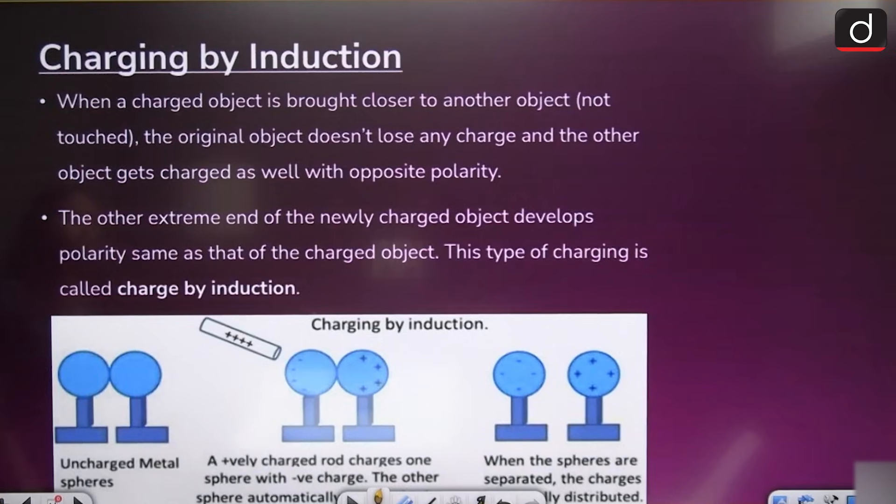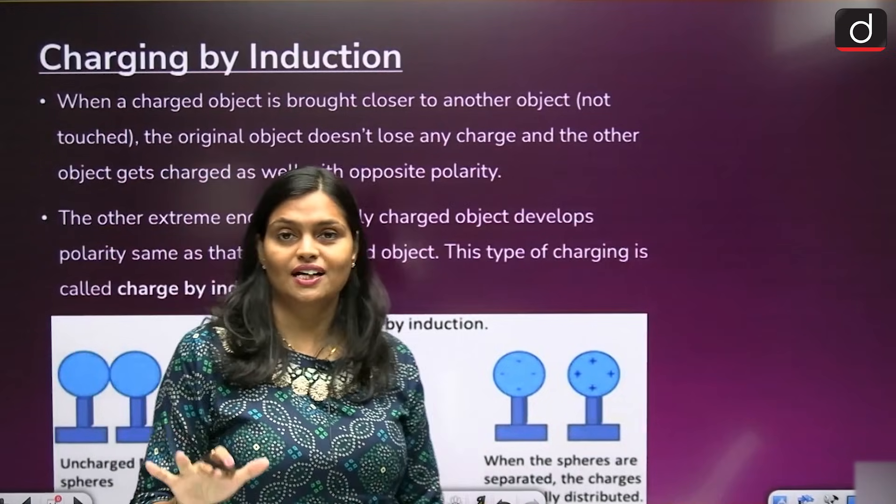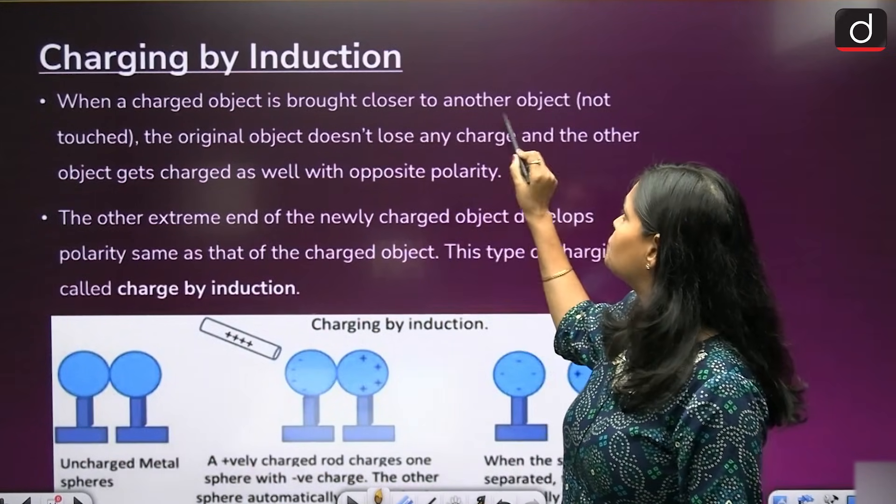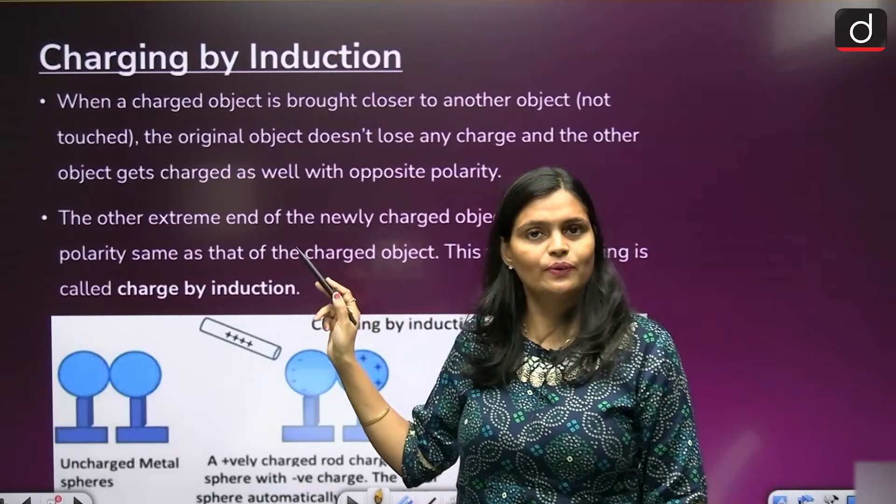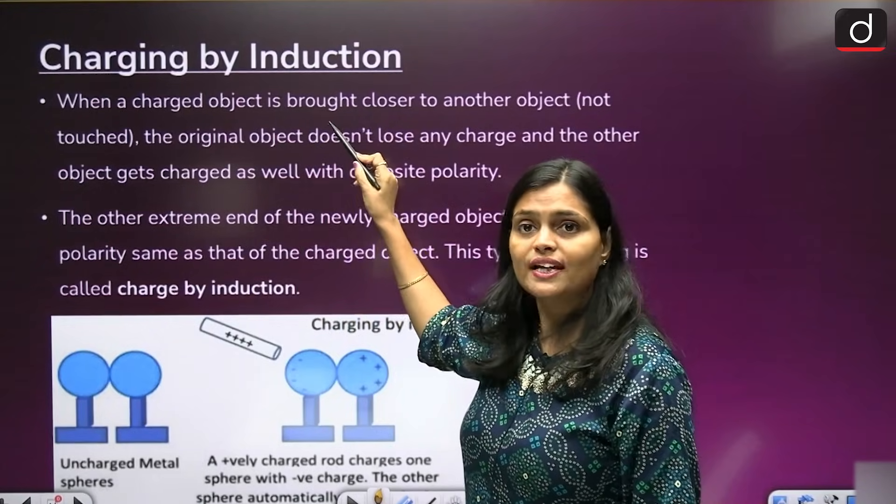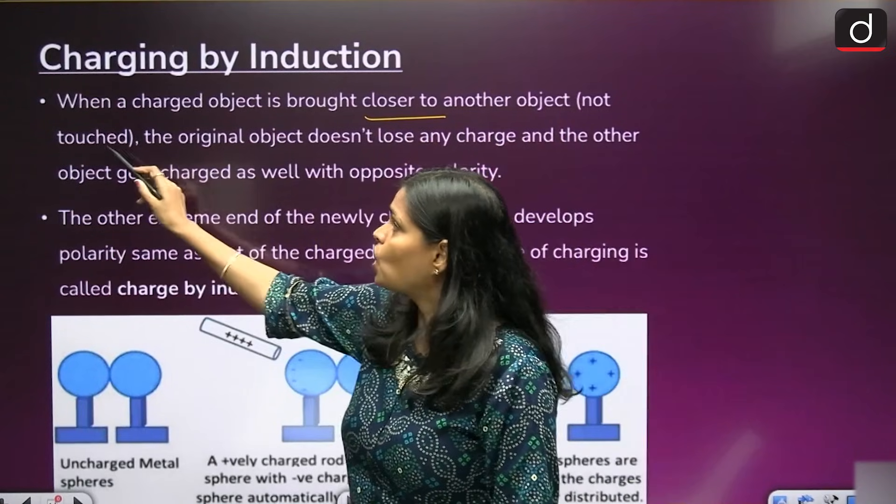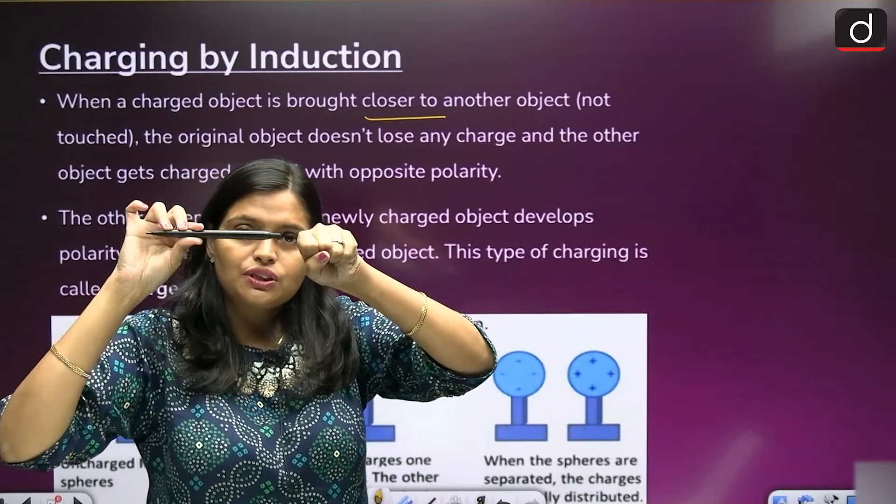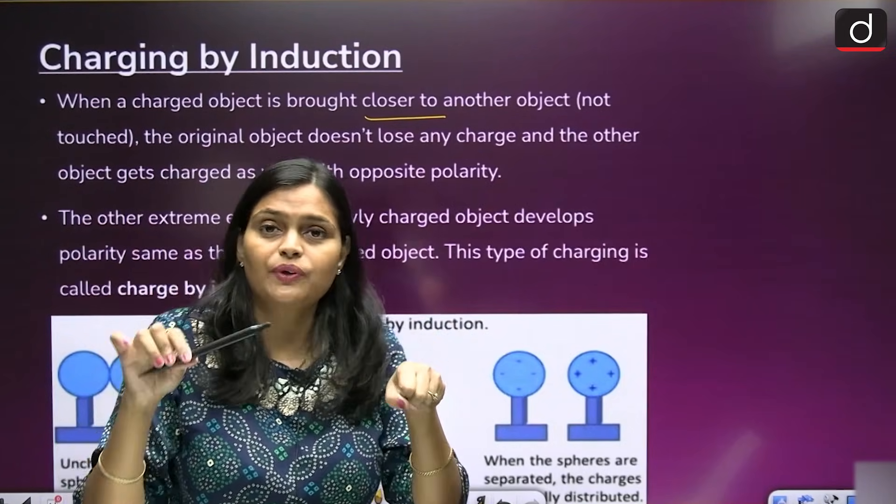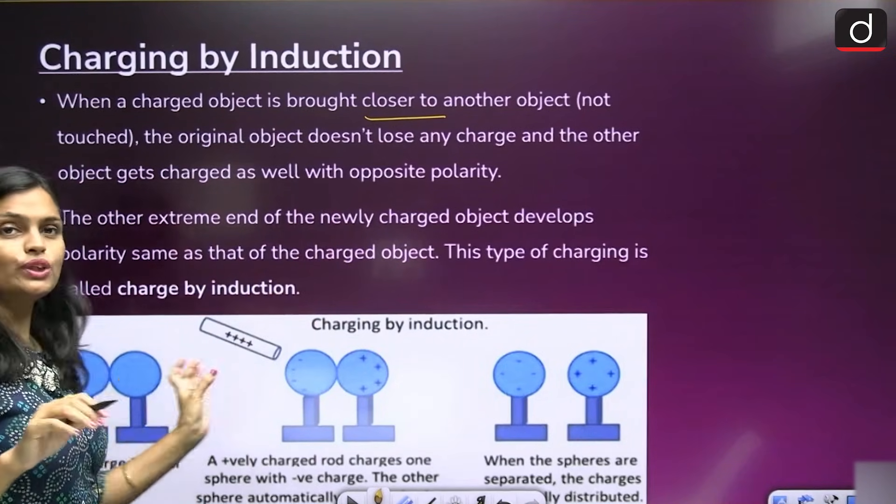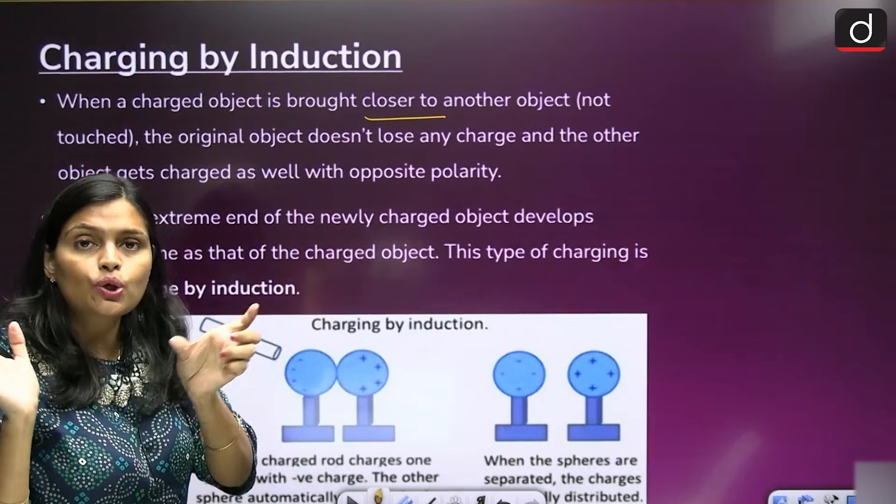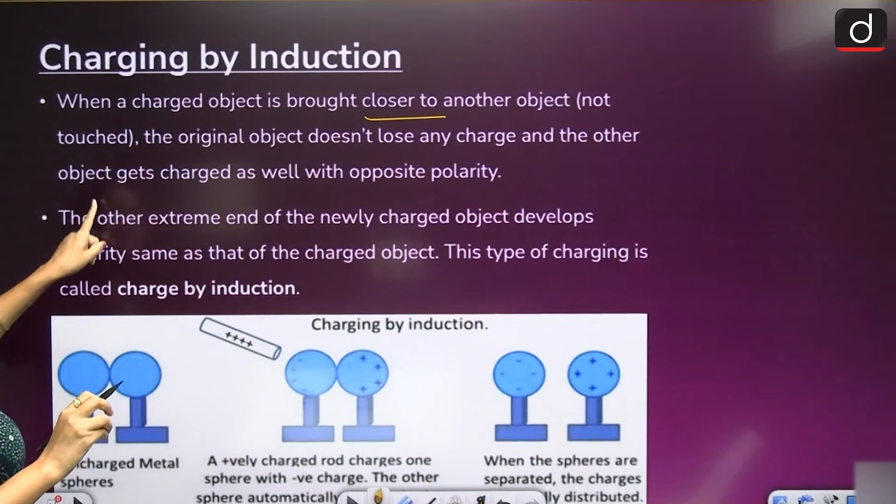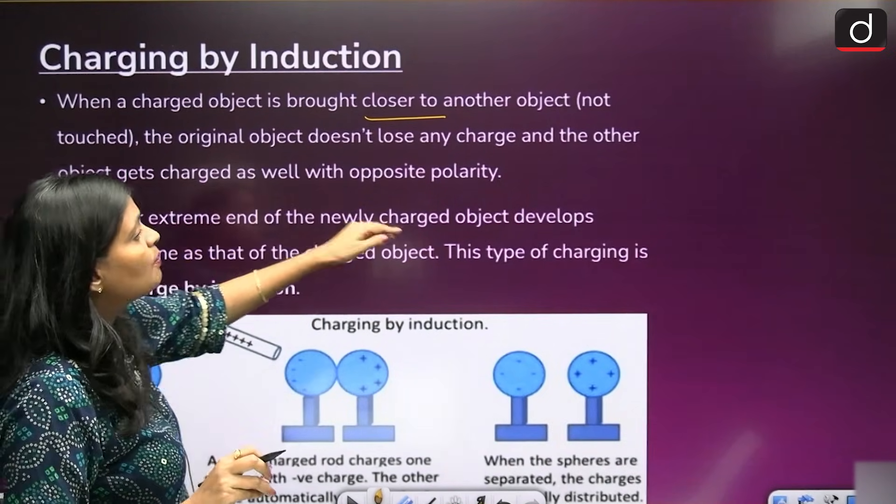Now charging by induction. When a charged object is brought closer to another object but not touched, in the previous condition you touch the rod with the sphere, then only the charge transfers. In this case, you just bring the two objects closer, you just bring the charged object closer to that. The original object does not lose any charge and the other object gets charged as well with opposite polarity.